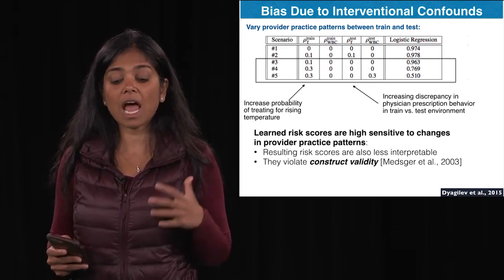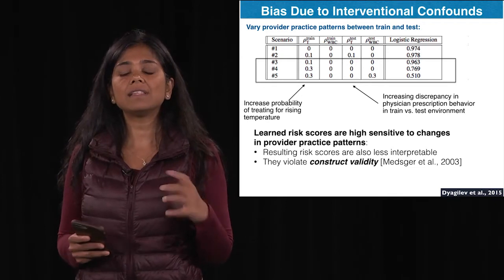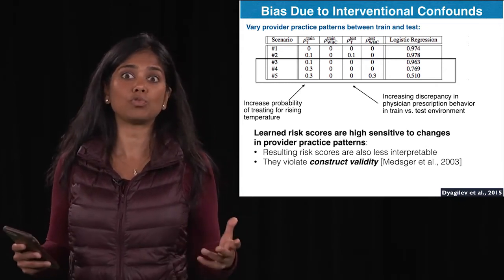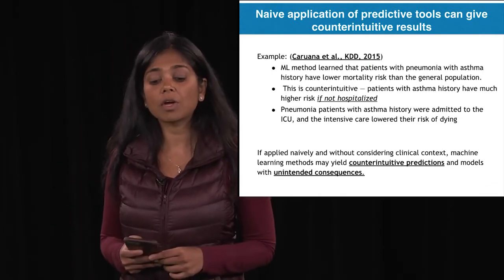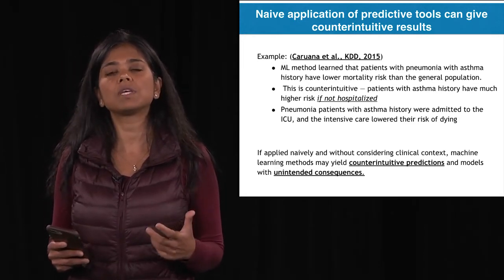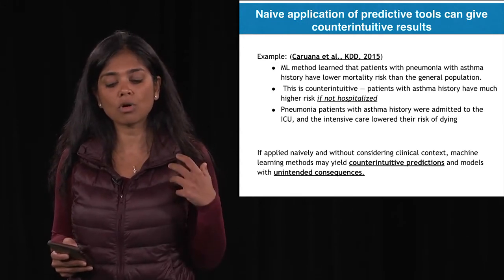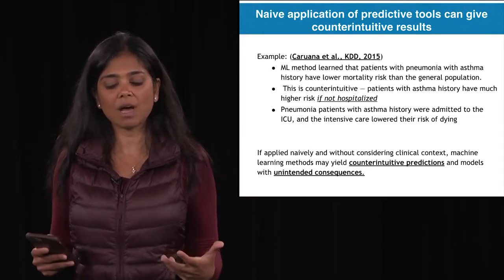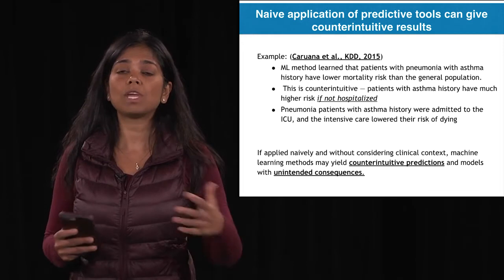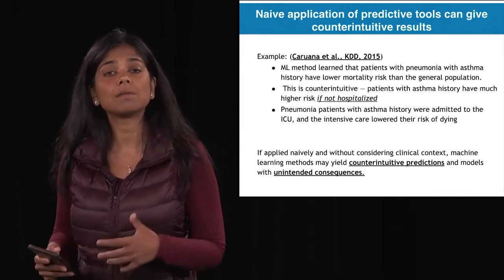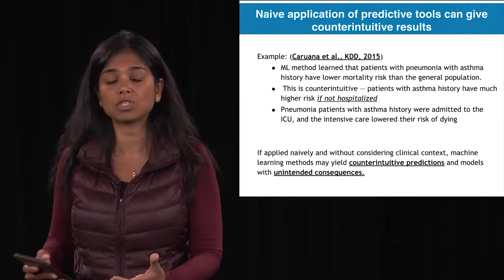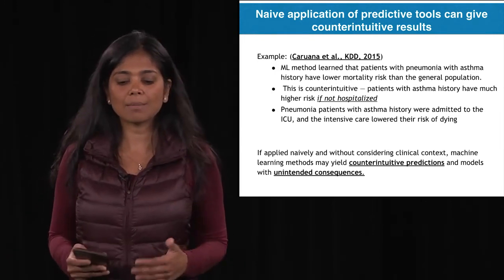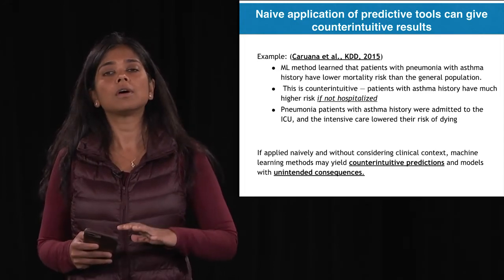As you increase the propensity with which providers treat based on increasing temperature, the risk association curve for death falls closer and closer to zero. We're learning risk scores highly sensitive to provider practice patterns. A related example by Caruana shows that patients with pneumonia and a history of asthma are generally more likely to die, but naive predictive modeling learns the opposite — that they have lower risk. The reason is these patients go to the ICU more often, receive a higher level of intensive care, and as a result actually tend to get better. Another example of why accounting for practice patterns matters.